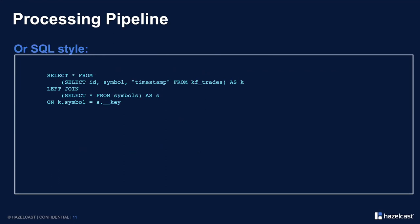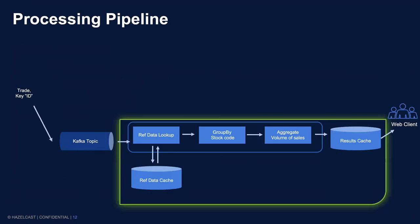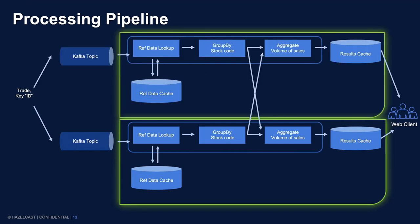If you're an SQL person, you can code this in an SQL-style manner. Conceptually, trades are keyed by trade ID and pass through the processing pipeline. The reality is Hazelcast is a clustered system running across multiple nodes — in this case two machines, giving two copies of the pipeline to process twice as fast. With 40 copies you'd process 40 times as fast. Scaling up is easy.